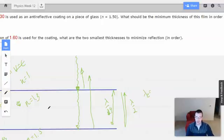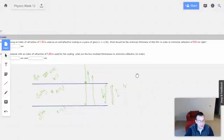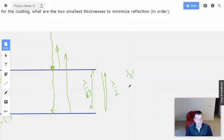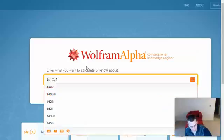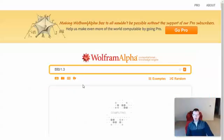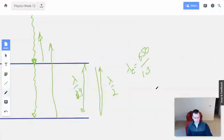And since we have an index of refraction of 1.3, we will take the wavelength of the light, which is 550. And we'll divide by 1.3. So we do 550 divided by 1.3, and we get 423 nanometers.